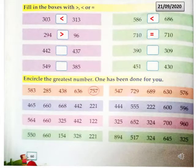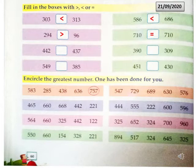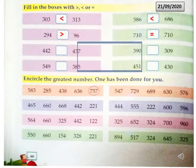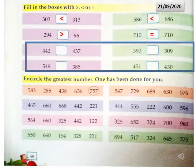Open your book to page number 60. Mention the date. Read the first question: Fill in the boxes with greater than, less than, or equal to sign. Now complete the remaining part of this question by putting the greater than, less than, or equal to sign.